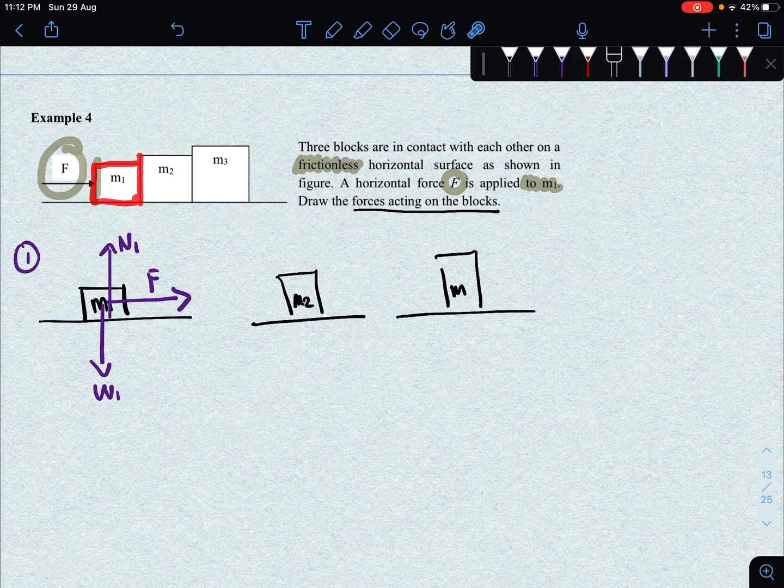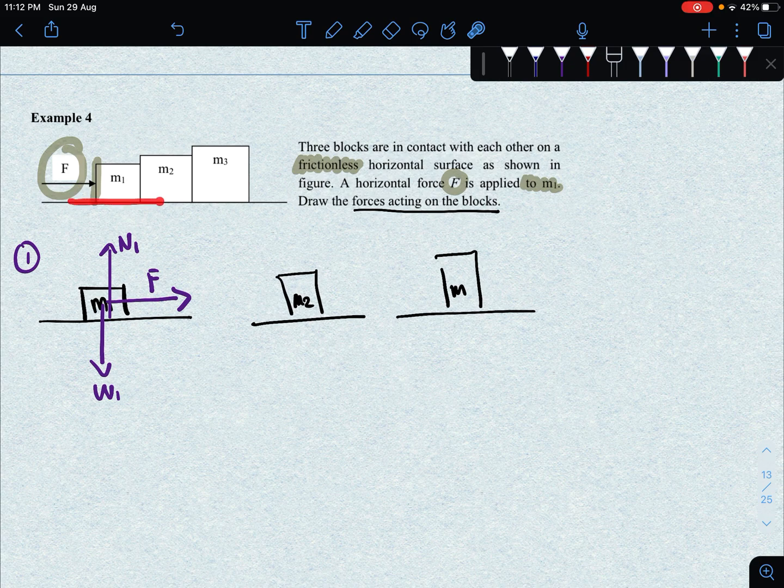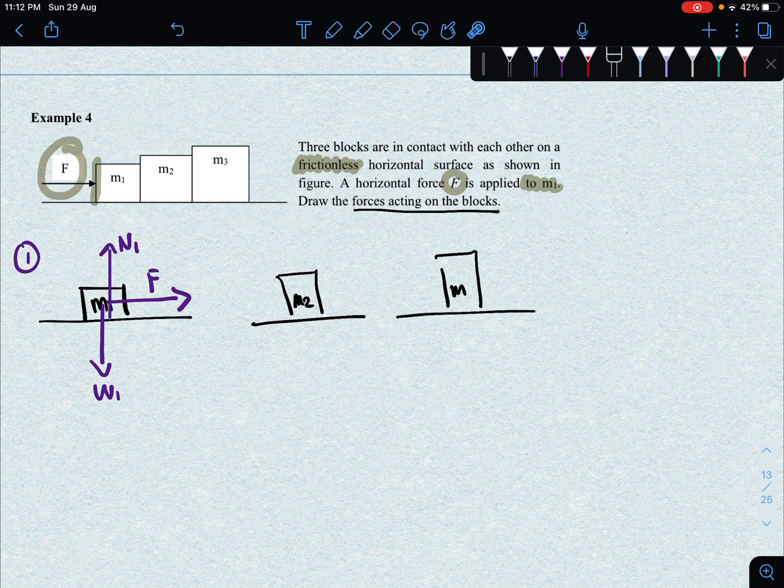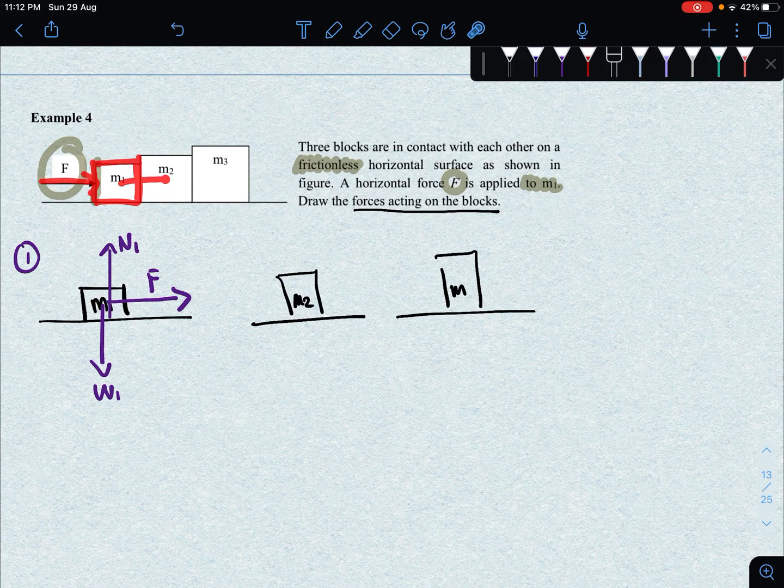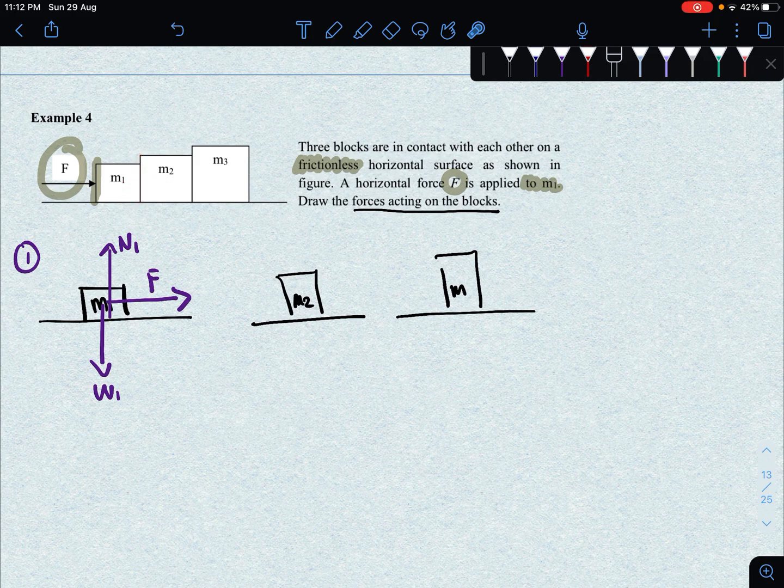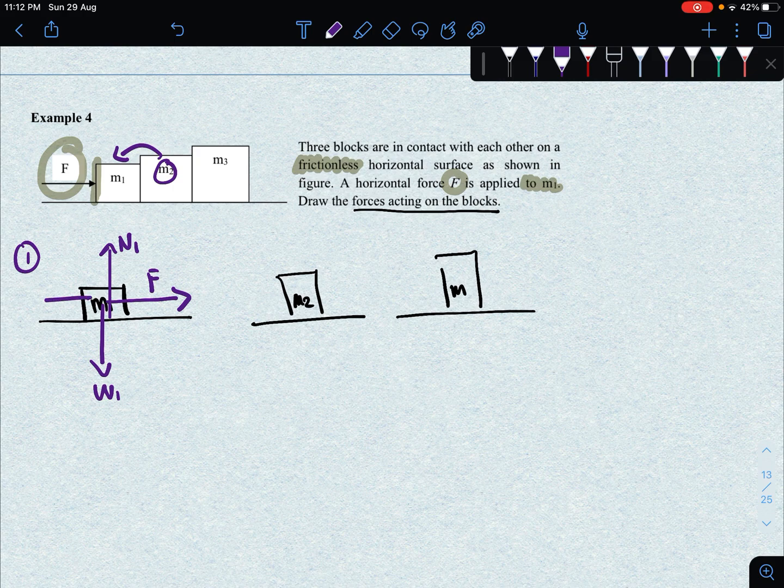However, there is one more force acting on M1 which is the contact force between M1 and M2. Your M1 and M2 are touching each other. When M1 is sitting on the surface, it will exert weight downward and then this surface is going to react by giving a normal force. Similarly, when M1 and M2 are in contact, you push with force F, this box is going to exert force on M2, and M2 will react.